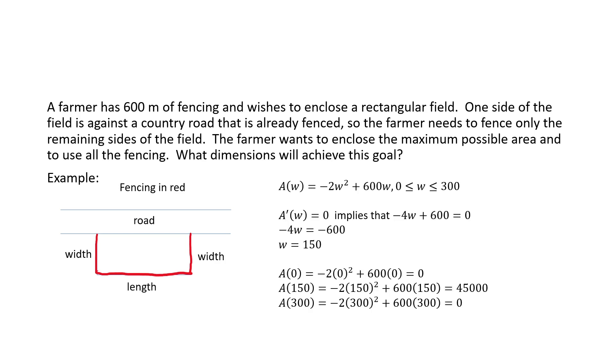We get to this equation that A of W is negative 2W squared plus 600W, and now we see that zero less than or equal to W, less than or equal to 300. We're going to set this derivative equal to zero. So negative 4W plus 600 equal to zero, and we'll see that W is 150.